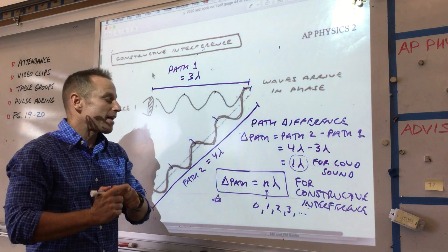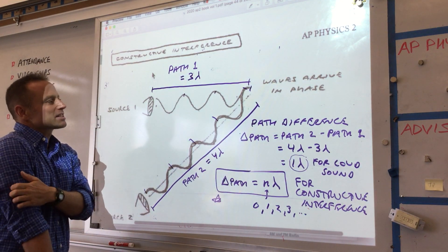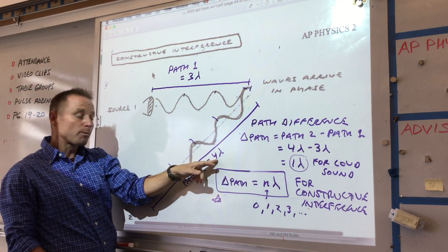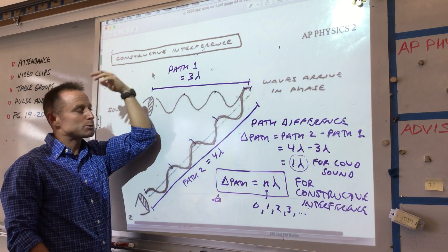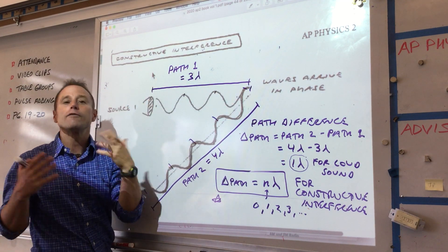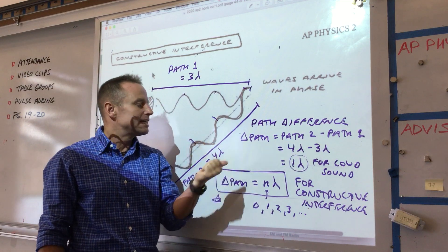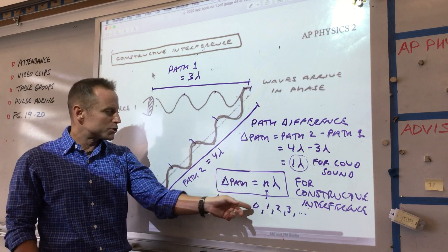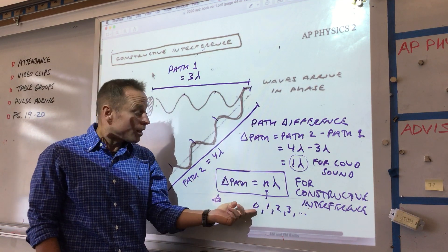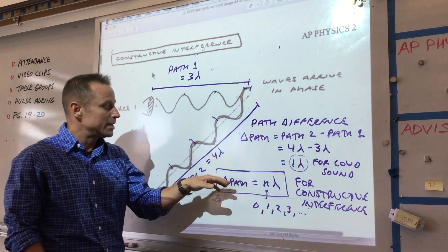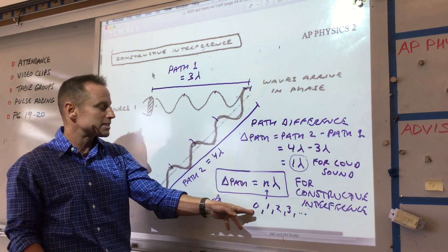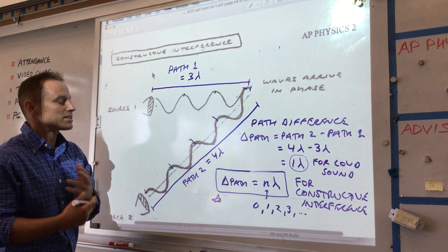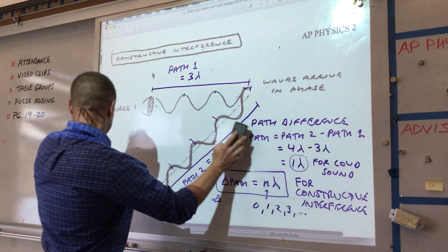The key point is the path difference. For example, if the paths were 3.25 and 4.25 wavelengths, it would still be loud because the difference is still one. If the path difference is an integer number of wavelengths, it's going to be loud. At all locations with a path difference of zero it's loud; at all locations with a path difference of one wavelength it's also loud — it's all of those locations simultaneously.